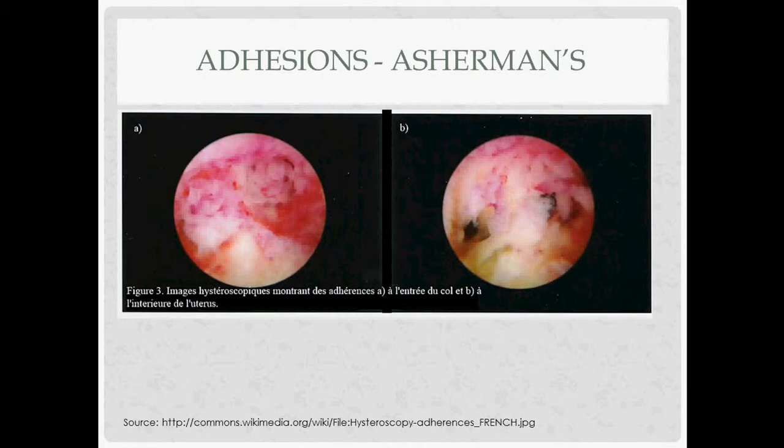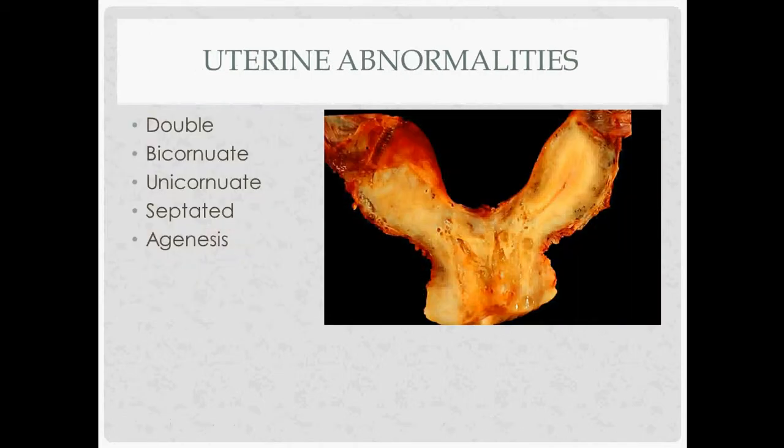This is a picture of what adhesions look like through a scope — an example caused by Asherman's syndrome. For uterine abnormalities: the uterus, cervix, and part of the vagina are formed by the two paramesonephric or Müllerian ducts coming together and joining. If you have two ducts that don't come together and join, you get double everything. A bicornuate uterus is when they partially join — the posterior part joins but the superior part doesn't. Unicornuate uterus is when you only have one duct. Septate uterus is when they come together but a septum remains in between. Agenesis is when neither duct forms and you just have a rudimentary vagina.